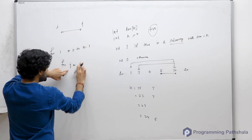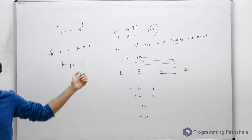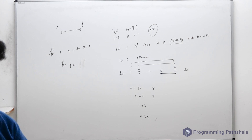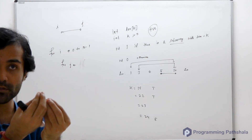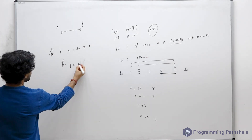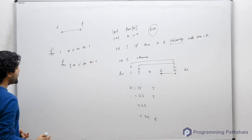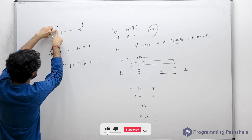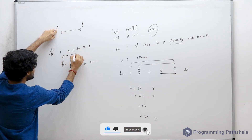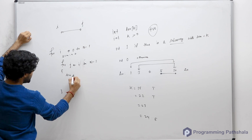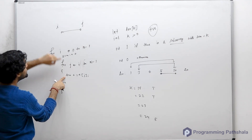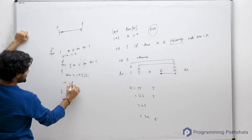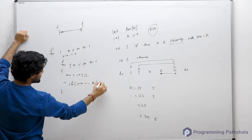j should vary from i to n-1, because i to i is also a valid subarray of size 1. You can initialize a sum variable to 0, and do sum += array[j]. At any point, the sum variable holds the sum of the subarray from i to j. If this sum equals k, you return true.